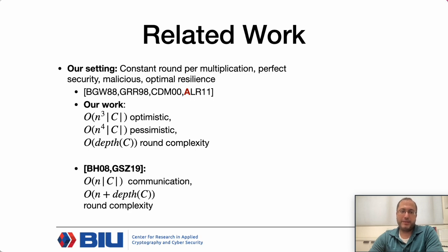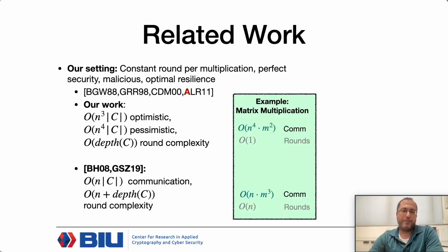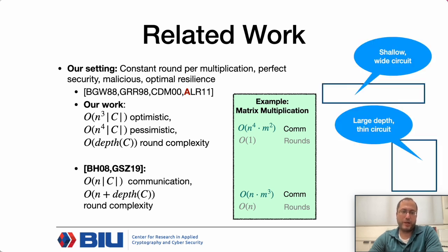In the player elimination technique, players detected cheating are removed from the protocol and some computation must be repeated. This increases round complexity for shallow circuits. Moreover, for circuits with multiplication depth 1, our protocol achieves communication complexity depending only on input and output size, independent of circuit size—and it is unclear whether a similar technique can be implemented in protocols based on player elimination. Those protocols are formally incomparable: for shallow wide circuits our protocol is more preferable, while for large-depth circuits the player elimination approach is better.